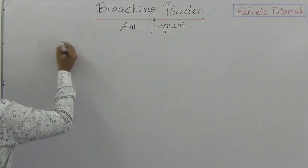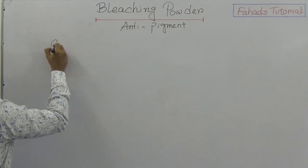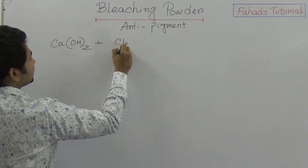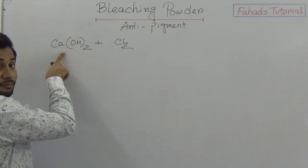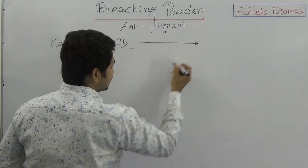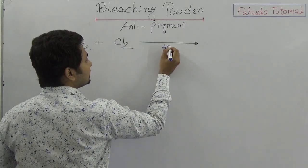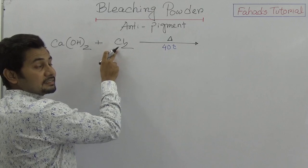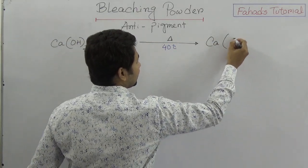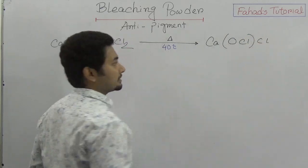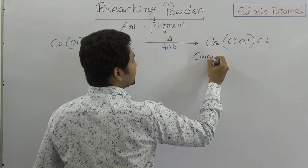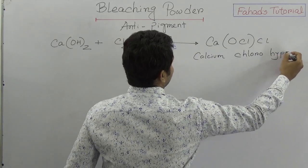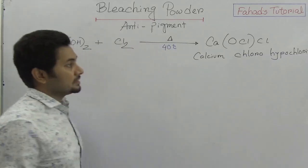The preparation of bleaching powder involves calcium hydroxide and chlorine reacting together. The chlorine gas is channeled through lime water at 40 degrees Celsius — this temperature is important. When heated and channeled through chlorine gas at 40 degrees Celsius, it produces calcium chlorohypochlorite. This is bleaching powder.